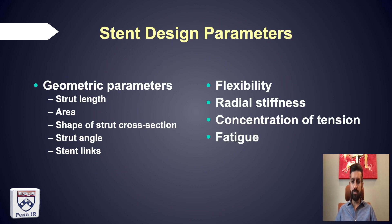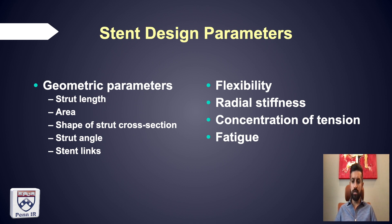There are many different types of stents with nuances for various pathologies, indications, and advantages and disadvantages. Key stent characteristics include varying flexibility, radial force, and fatigue tolerance. The geometric parameters that separate different stents include strut length, free cell area, strut cross section, strut angle, and different types of stent links.